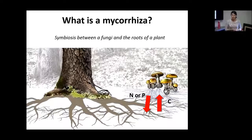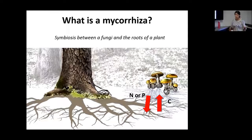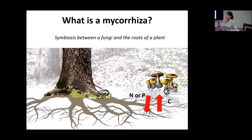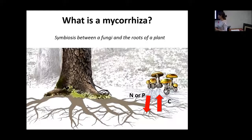What is an ectomycorrhizal, or a mycorrhizal in general? This is a symbiosis between a fungus and the roots of a plant where there is a mutual benefit. The fungi help the plant to absorb nutrients and water from the soil, and when they transfer that to the plant, the plant gives the fungus some carbon in terms of sugars that they produce by photosynthesis.